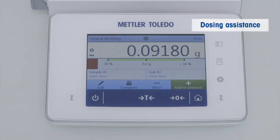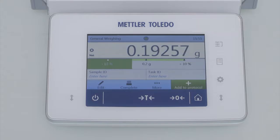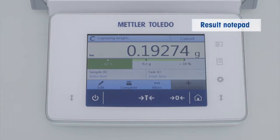The dosing guide helps you to ensure the exact amount within a defined tolerance indicated by the green bar on the display. After dosing in the desired amount we simply push the add to protocol button to transfer the results to the result notepad on the right side of the display.